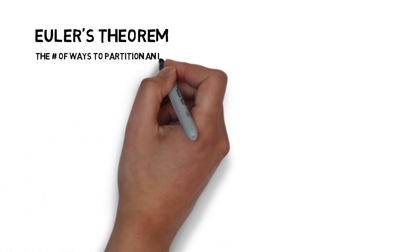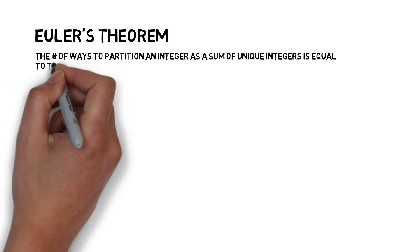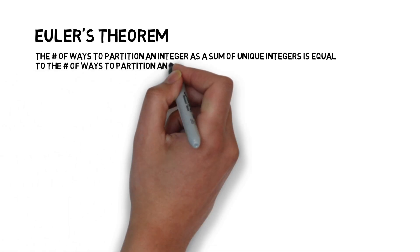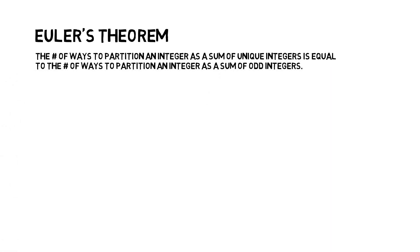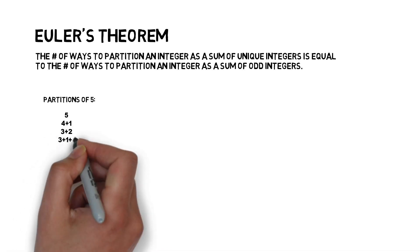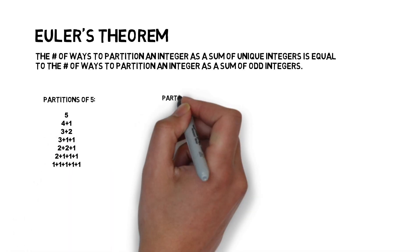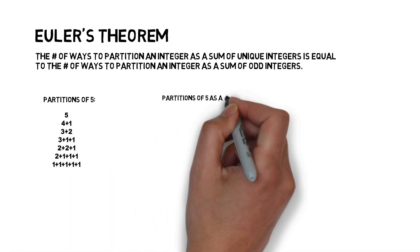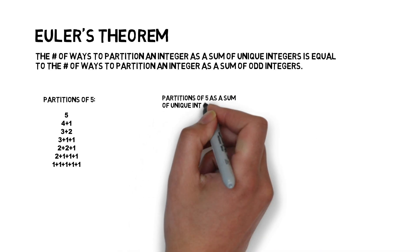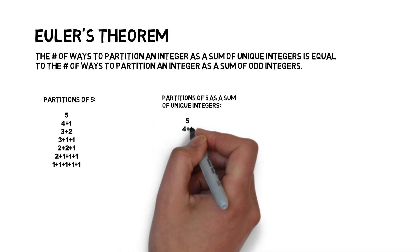Now let's take a look at Euler's theorem. Euler's theorem states the number of ways to partition an integer as a sum of unique integers is equal to the number of ways to partition that same integer as the sum of odd integers. For example, let's take a look at the partitions of 5. Of the partitions of 5, how many of them are a sum of unique integers? Well, we have three of them: 5, 4 plus 1, and 3 plus 2.